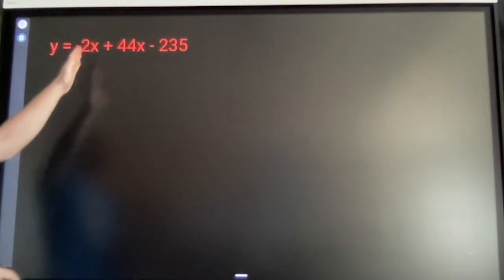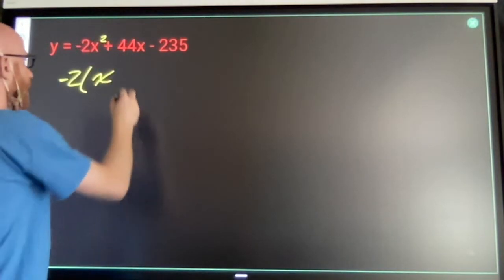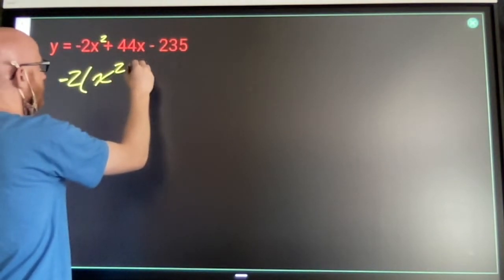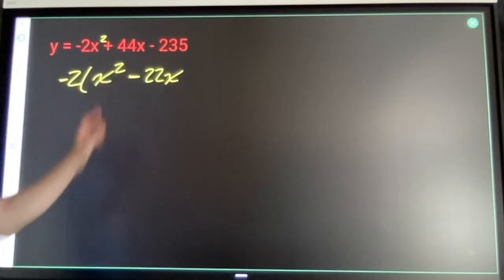Divide out the negative 2. That should be x squared. Divide out the negative 2. Complete the square.